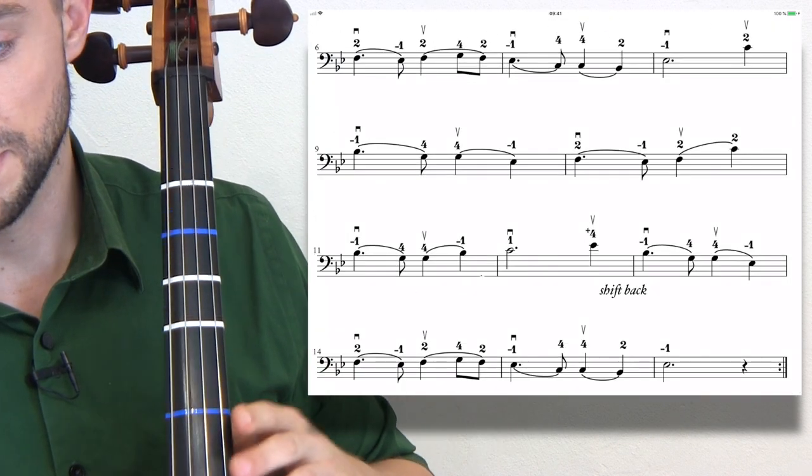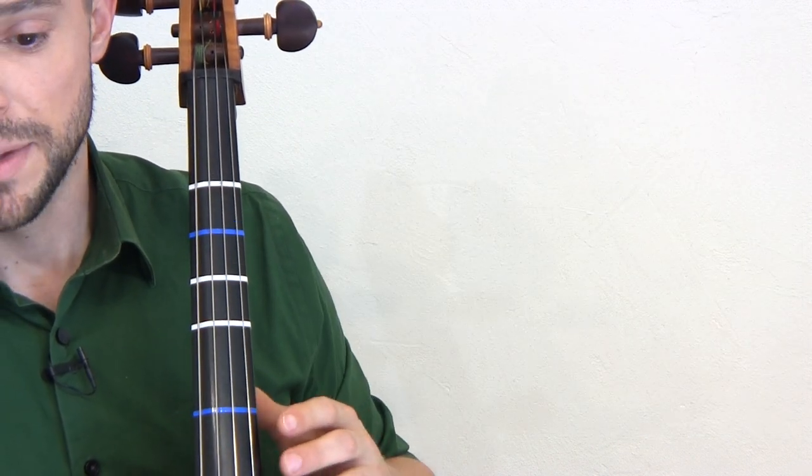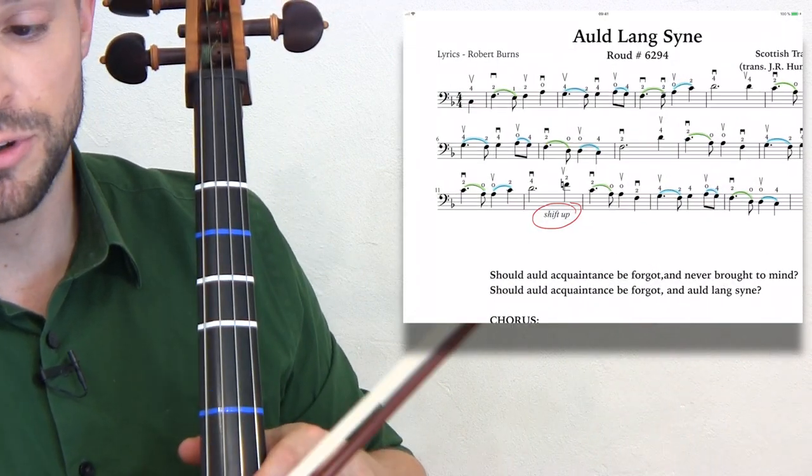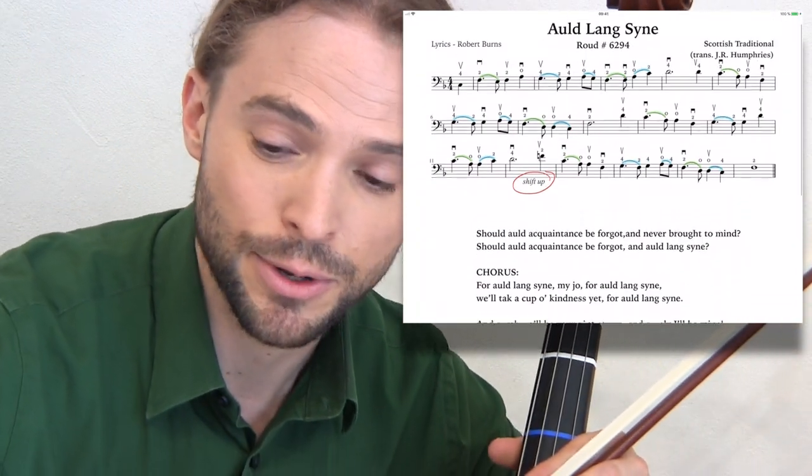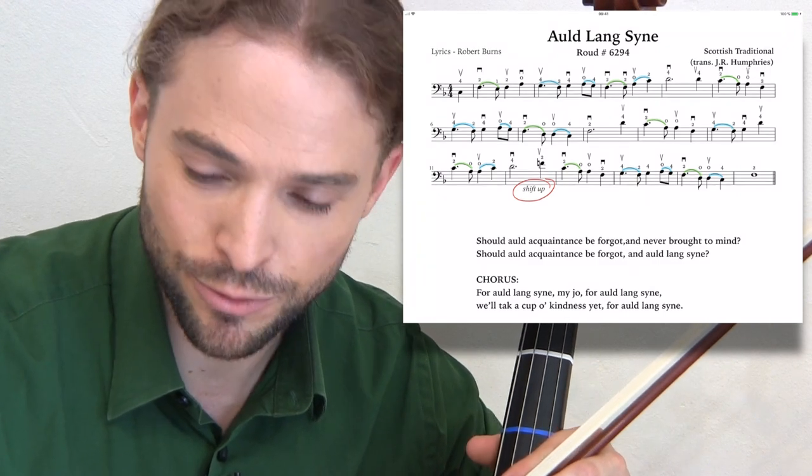And there's a repeat at the end because there's many verses to this. Now I do have an easier version of this in F major, which I will link in the description below. But besides that, it's a wonderful piece to work on your intonation in B flat major. I hope you liked it. Please stick around because we will always continue to learn a lot.